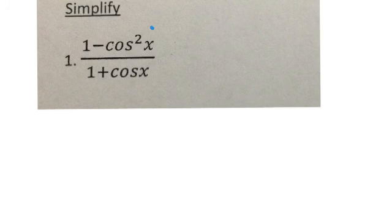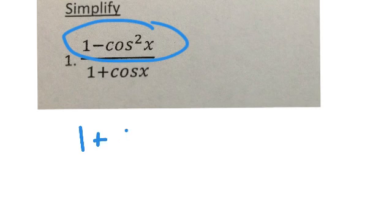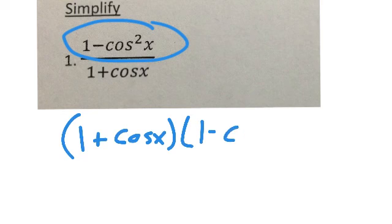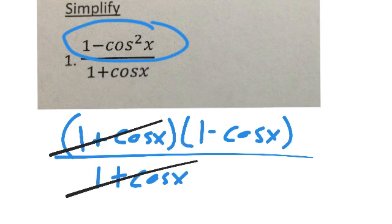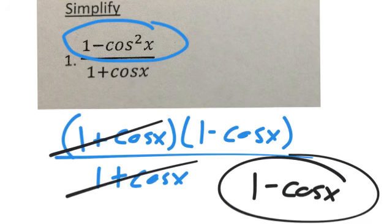So I look at the numerator. That's the difference of perfect squares. 1 is a perfect square. Cosine squared is a perfect square. So I can factor that as 1 plus cosine x times 1 minus cosine x. And then this is going to be over 1 plus cosine of x. Now I have a like factor of 1 plus cosine x that I can cancel by, and that leaves me with 1 minus cosine x. Final answer.